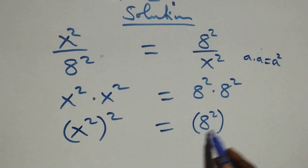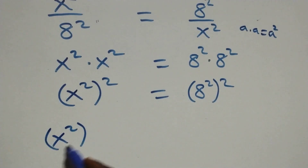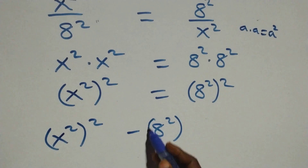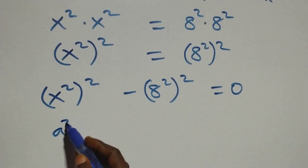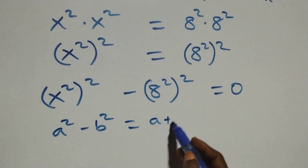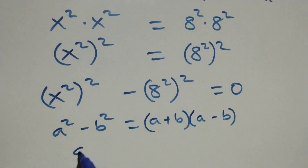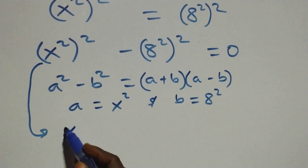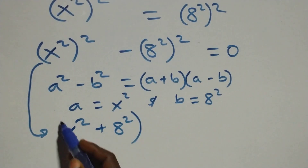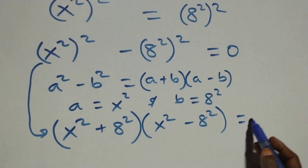From here we take the right-hand side to the left-hand side, so what we have becomes a squared squared minus 8 squared squared equals zero. Applying the difference of squares identity — a squared minus b squared equals (a + b)(a − b) — with a standing as x squared and b standing as 8 squared, what we have becomes (x squared + 8 squared)(x squared − 8 squared) equals zero.